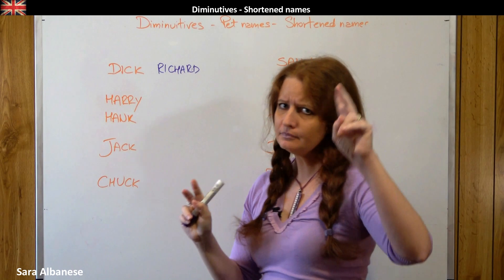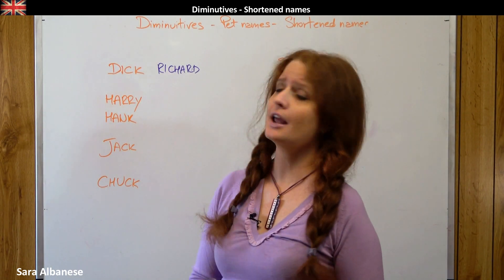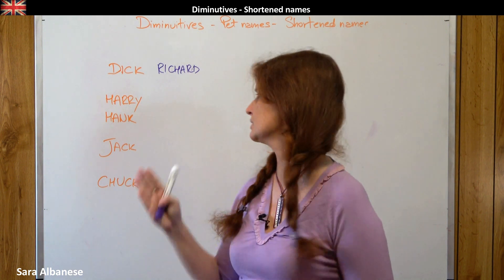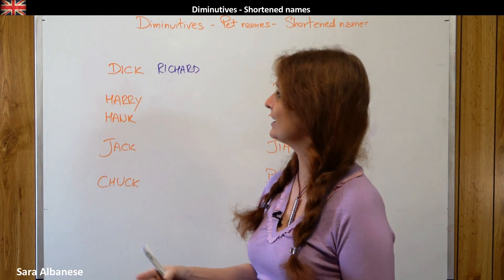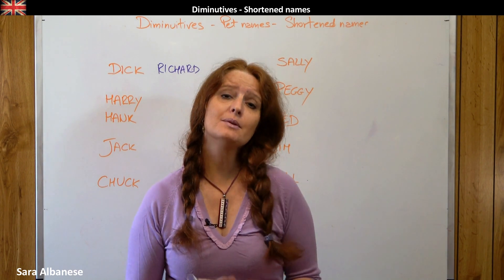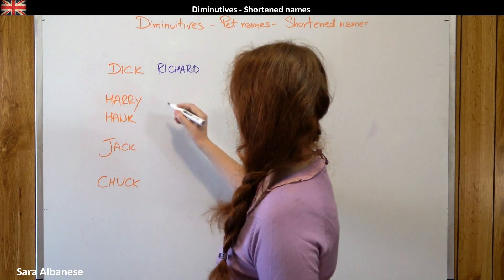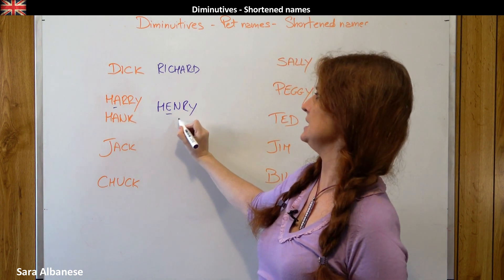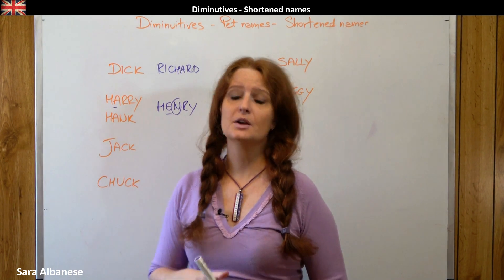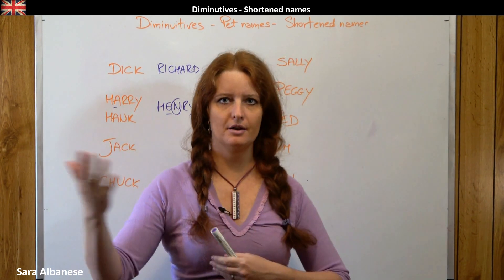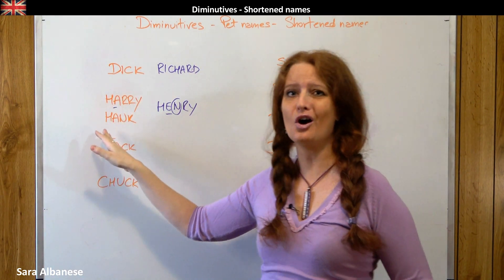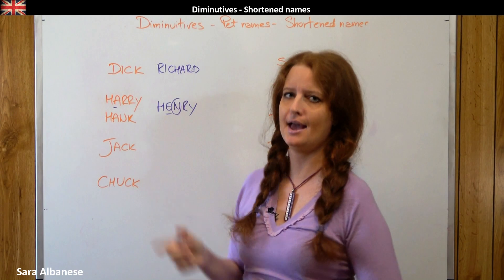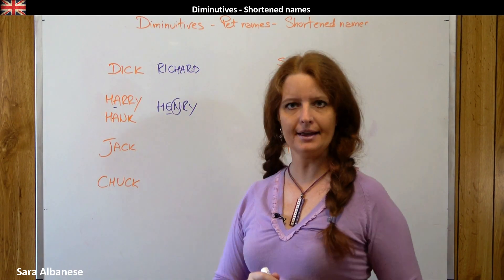Next, there are actually two different names here: Harry and Hank. Harry is probably closer to the original one, while Hank is completely different. The original name is obviously Henry. The spelling is completely different — we don't have an A but an E, and we have the N. We talk about Harry and Meghan all the time, but we have to remember that Harry is just a sort of pet name, because the official name should be Henry.